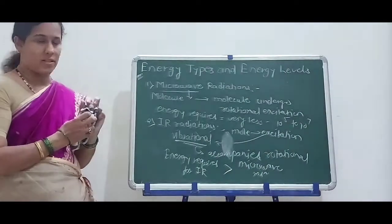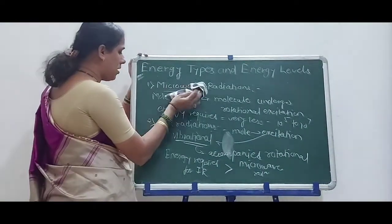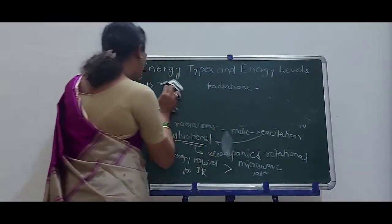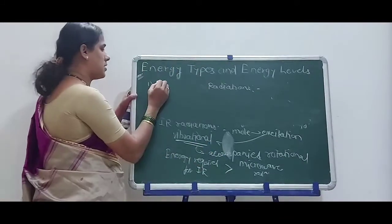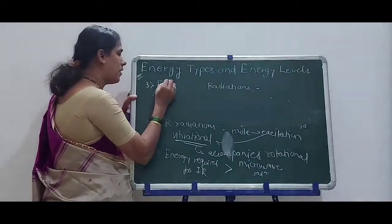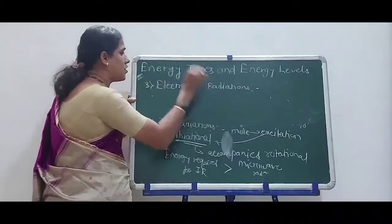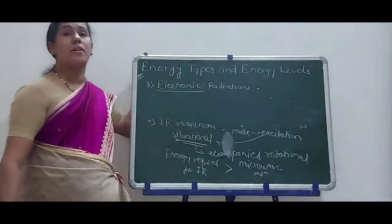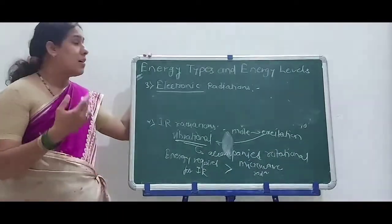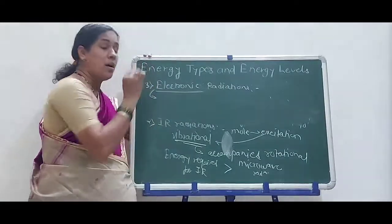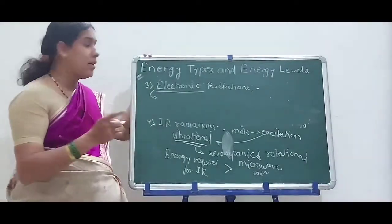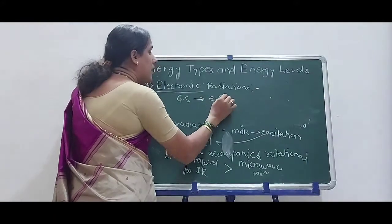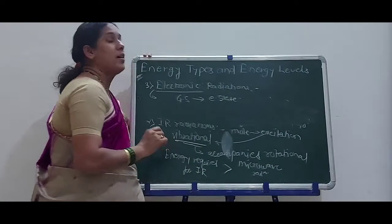The third point is about electronic radiations. As the name suggests, in electronic radiations there is movement of an electron from a ground state level to an excited state level. When we say electronic radiations, it must be a UV radiation.